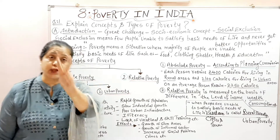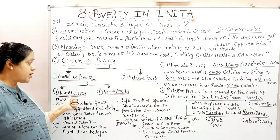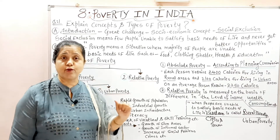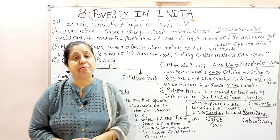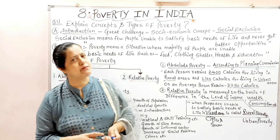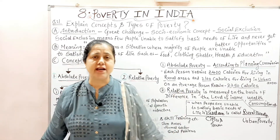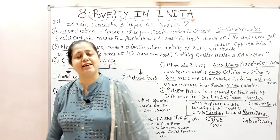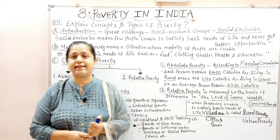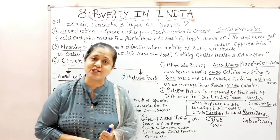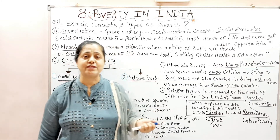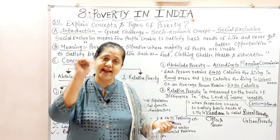So we understood the concepts of poverty: two concepts — absolute poverty and relative poverty. Absolute poverty has two types — rural poverty and urban poverty. I hope you understood this whole topic very well. I have written everything easily in my notes. If you like this video, do share with your friends, and if you want my handwritten notes, the link is given in the description box. Thank you.